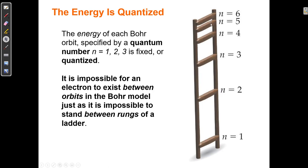The electron can go from here to here in one big jump, and from here to here in one big jump. It can't spiral closer because spiraling implies it's going between levels — like being in between three and four. Bohr says no: the electron disappears from one rung and reappears at another, dropping down to this level, then slowing a little more and dropping to the next level.